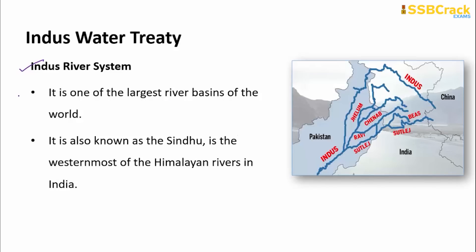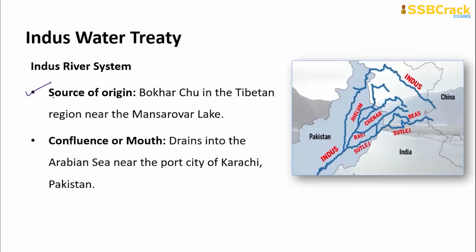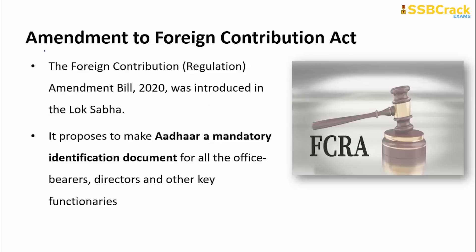The Indus River System is one of the largest river basins in the world. The river Indus is known as Sindhu and is the westernmost Himalayan river in India. It originates at Bokhar Chu in the Tibet region near Mansarovar Lake. The river drains into the Arabian Sea near the port of Karachi, Pakistan.